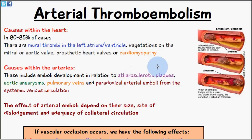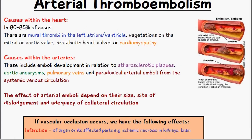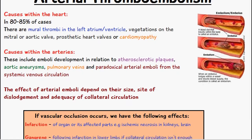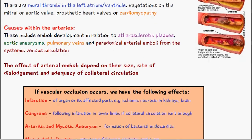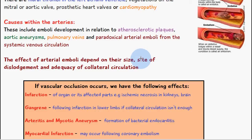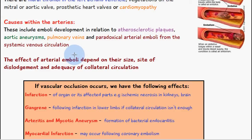It can also be some other cause of myopathy. We can also have an arterial thromboembolism due to some kind of cause within the arteries — so the emboli can develop in relation to an atherosclerotic plaque, aortic aneurysm, it could develop on pulmonary veins, and paradoxical arterial emboli from the systemic venous circulation.